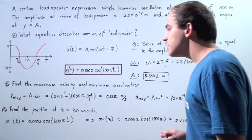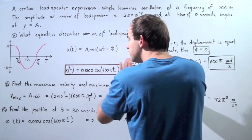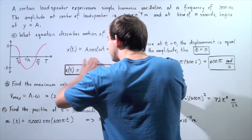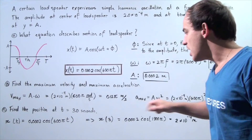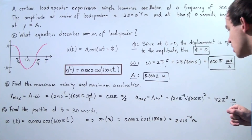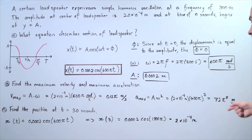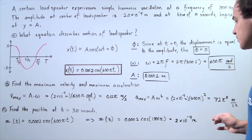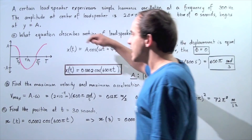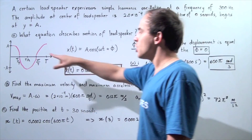For part C, find the position at time equals 3 seconds. In part A we found our position formula with respect to time, so we plug t equals 3 seconds into the equation: 0.0002 multiplied by cosine of 3 times 600 times pi. Plugging this into the calculator gives 2 times 10 to the negative 4 meters as the position of the object at t equals 3 seconds. That means at t equals 3 seconds, our object is at the level corresponding to an amplitude of 2 times 10 to the negative 4, which is equal to A.